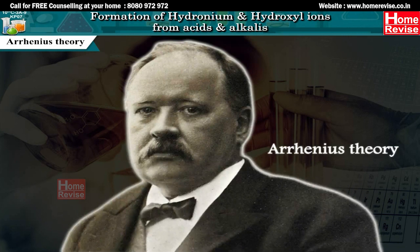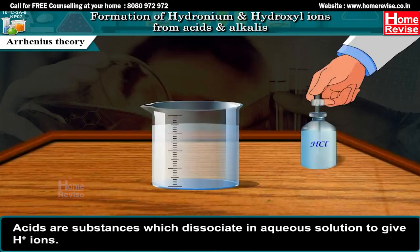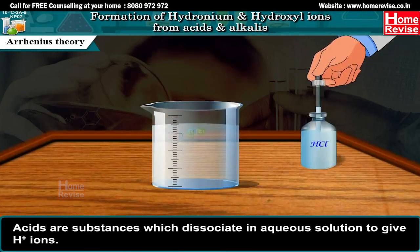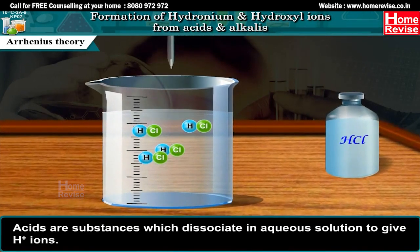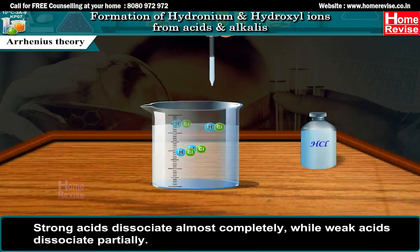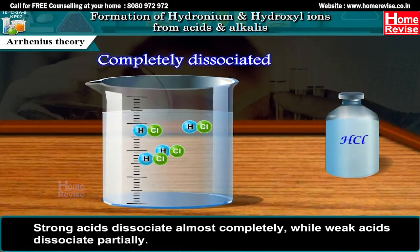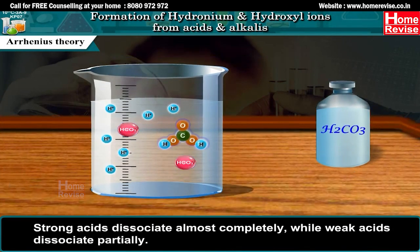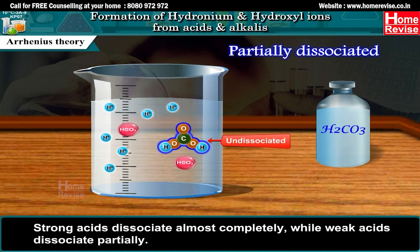Arrhenius Theory: Acids are substances which dissociate in aqueous solution to give H+ ions. Strong acids dissociate almost completely while weak acids dissociate partially.